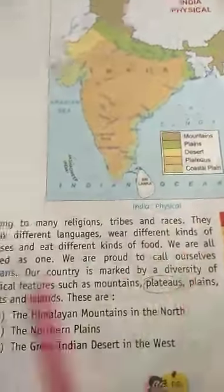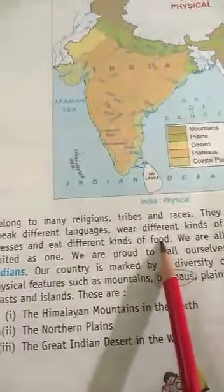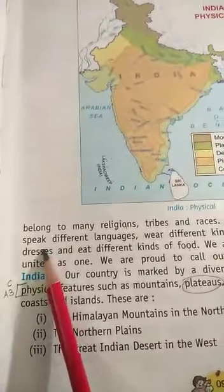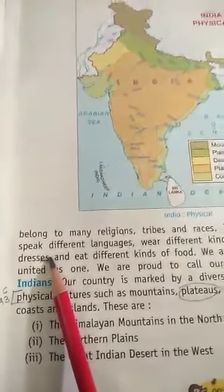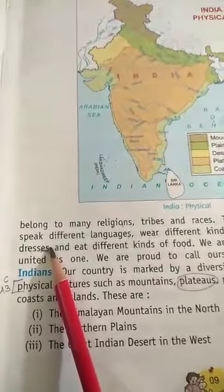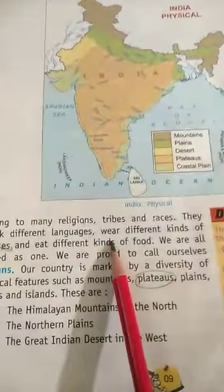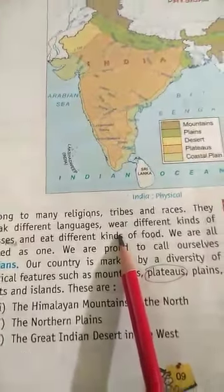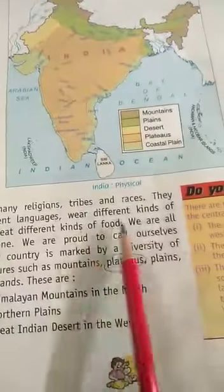People wear different kinds of dresses and eat different kinds of food. Marathi people used to wear sarees, and men used to wear different kinds of clothes in traditional form. South Indians used to have dosa, idli — we are having a different kind of variety of foods.